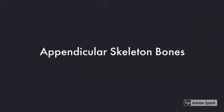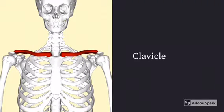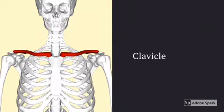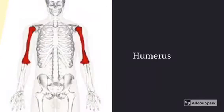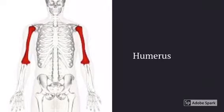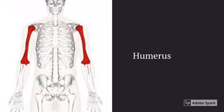This video is to explain the bones of the appendicular skeleton. This bone is called the clavicle, aka your collarbone. This bone is called the humerus. Be sure you check the spelling on this one — it's not like being funny.